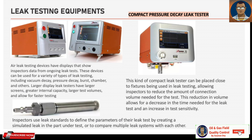Let us have a look at some leak testing equipment. Air leak testing devices have a display that shows inspector data from ongoing leak tests — you can see these pictures within the slides. These devices can be used for a variety of leak testing types, including vacuum decay, pressure decay, burst, chamber, and others. Larger display leak testers have larger screens, greater internal capacity, larger test volumes, and allow for faster testing. The compact pressure decay tester can be placed close to the fixture being used, reducing the connection volume needed, which decreases test time and increases test sensitivity.